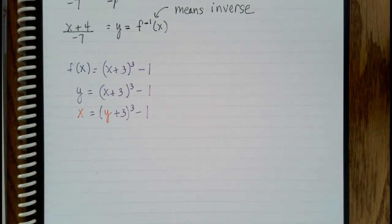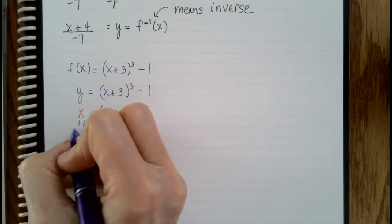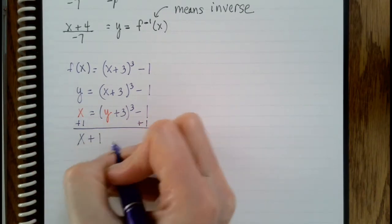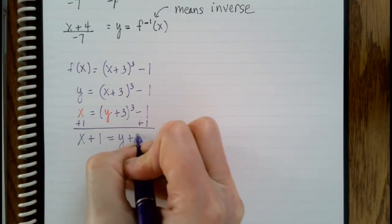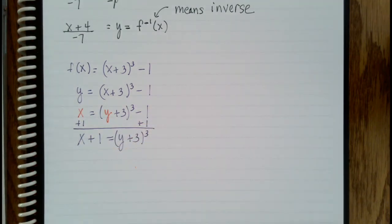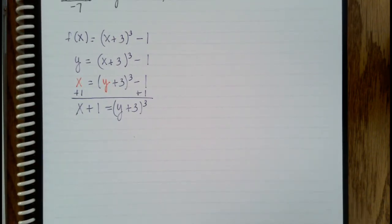Now we're to the point where what we want to do is we want to solve for y. So we're going to add 1 to both sides. And we get x plus 1 equals y plus 3 cubed. And again, our ultimate goal is to figure out what does y equal. And right now y is attached to 3 and cubed.